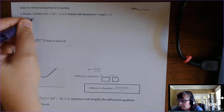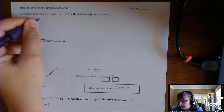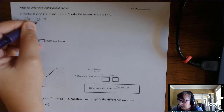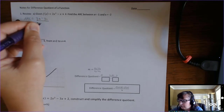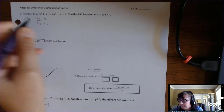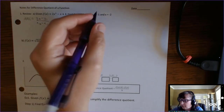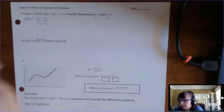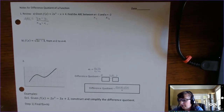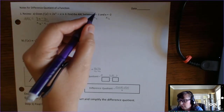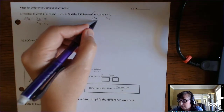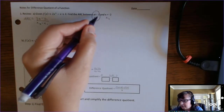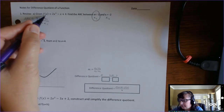The average rate of change is y2 minus y1 over x2 minus x1. We have our x1 and x2, but we don't have our y1 and y2. So we have to plug these x-coordinates into the function to find their y-coordinate partners.